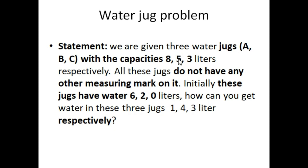So if we want to put six liter water in jug B then it will not be possible because the capacity of jug B is 5 liters. The capacity of jug C is 3. So here is the sequence. All these jugs do not have any measuring mark on it. This is a very important parameter to solve this problem.